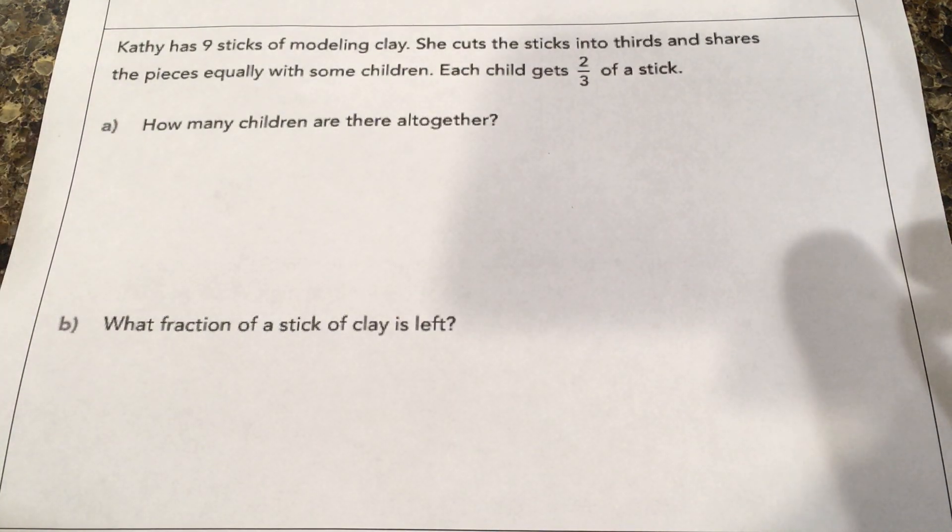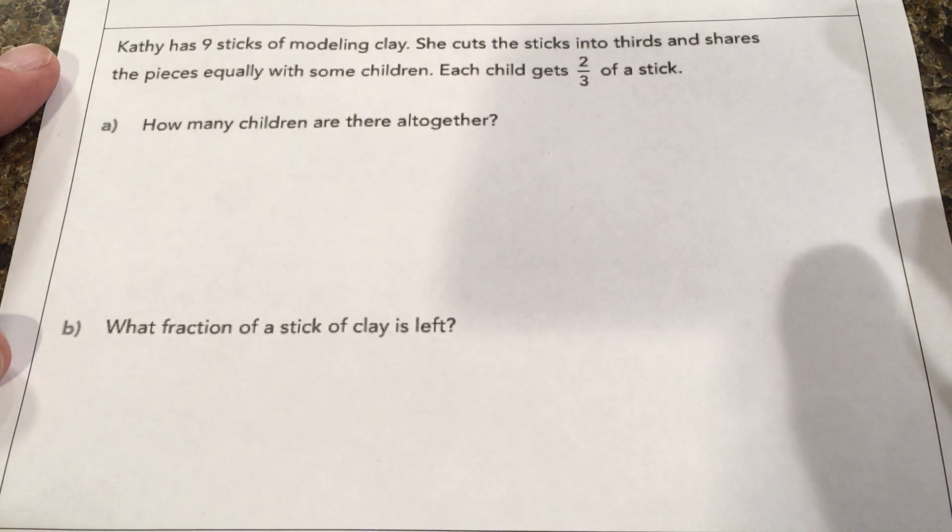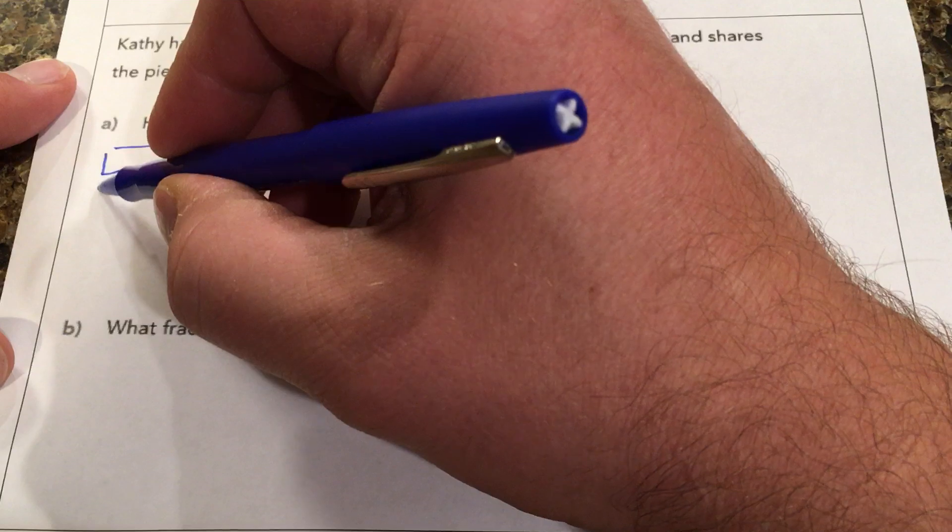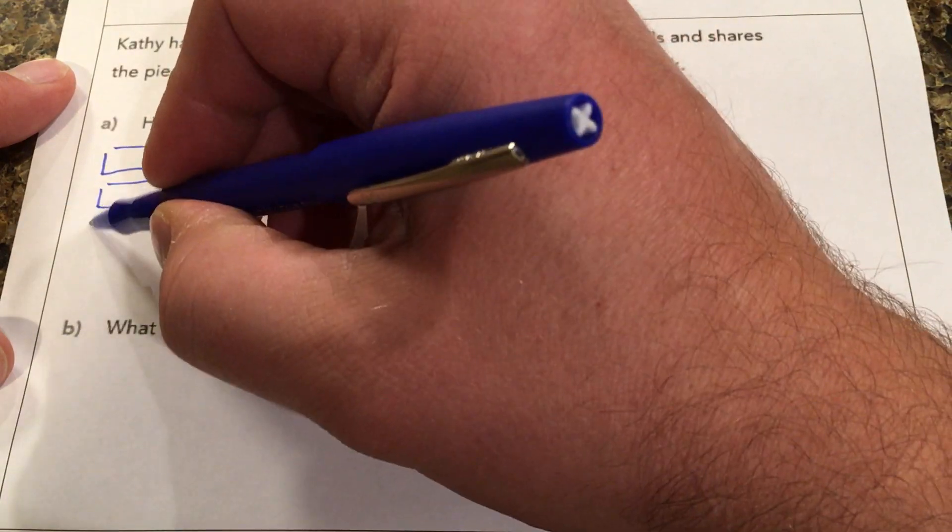Kathy has nine sticks of modeling clay and she cuts the sticks into thirds and shares the pieces equally with some children. Each child gets two-thirds of a stick. So we could just draw this out. We could draw our nine sticks of clay.